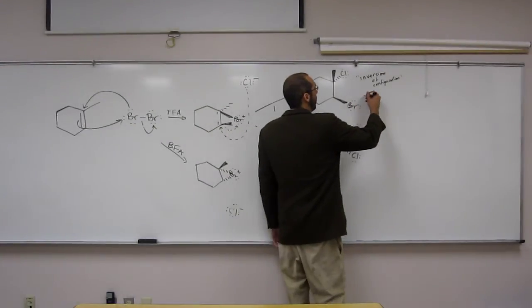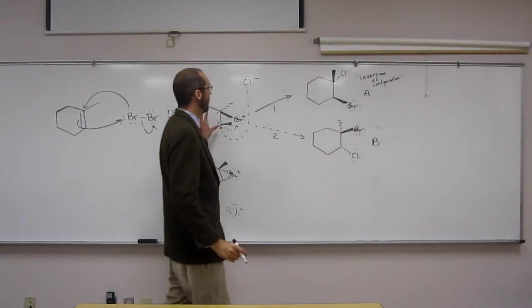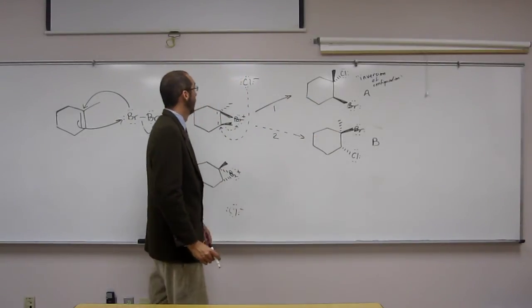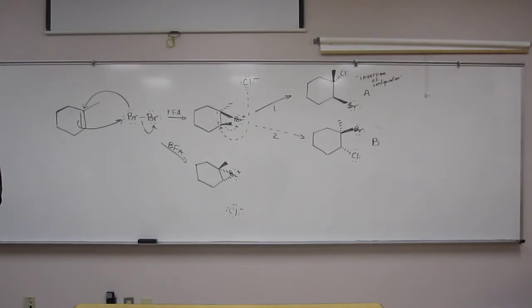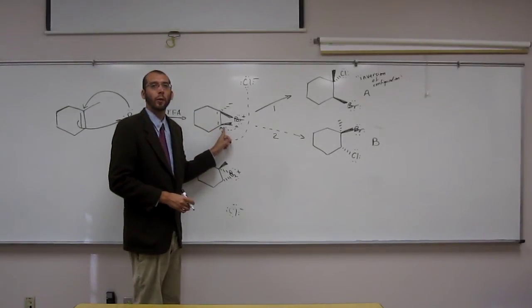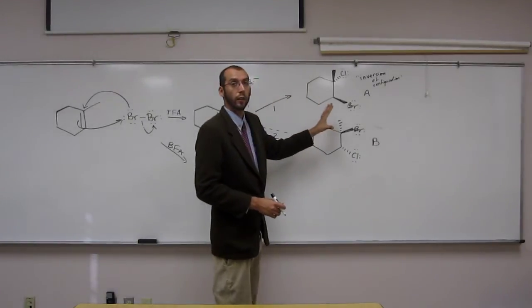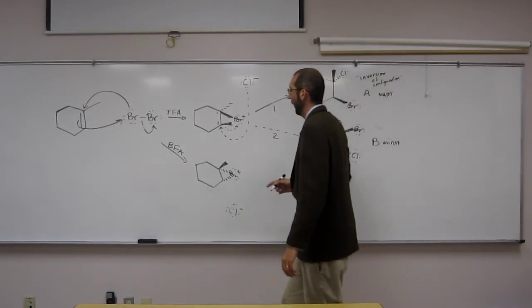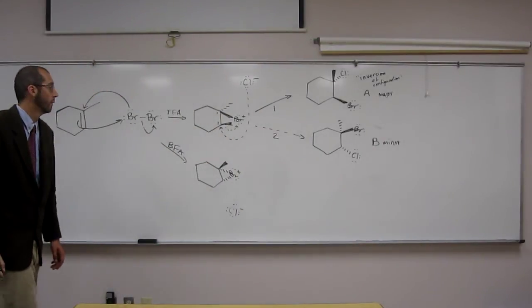So we're going to call this product A and this one product B. From this reaction here, just this one that we're looking at, which one would be formed in the higher percentage? A. Why A? I would say because bromine is huge and chlorine is a little smaller and it's kind of interfering with the methyl group. Remember what we talked about? Yeah, relate it back to those like pseudo-carbocations that we were talking about. So the tertiary is more stable so this one wants to hold on to the bromine tighter. So from this reaction here, A would be major and B would be minor. Now we've got to see what this reaction turns out.